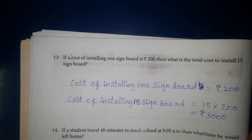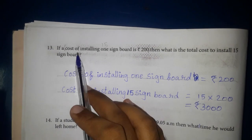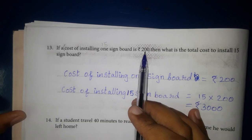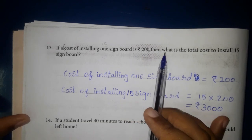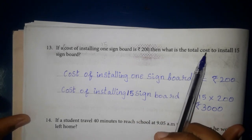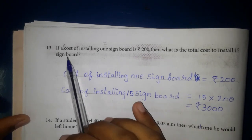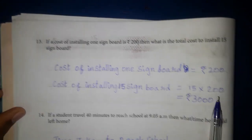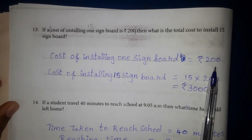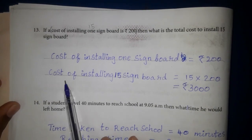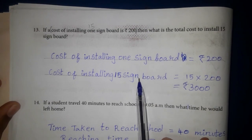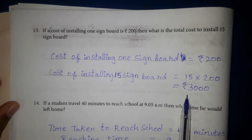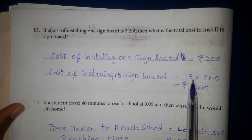13th one. If the cost of installing one signboard is Rs. 200, then what is the total cost to install 15 signboards? Cost of installing 15 signboards = 15 into 200 = Rs. 3,000.